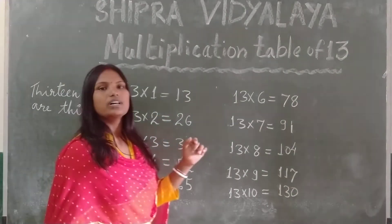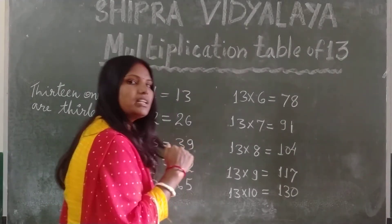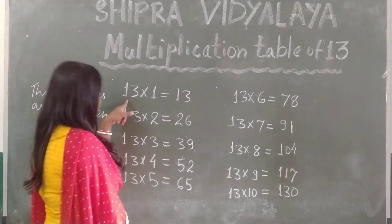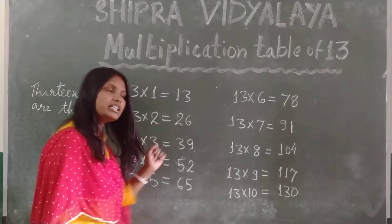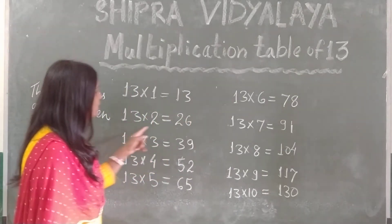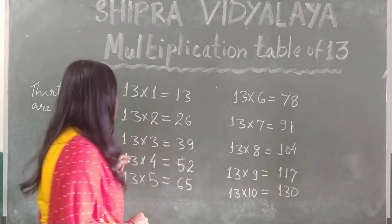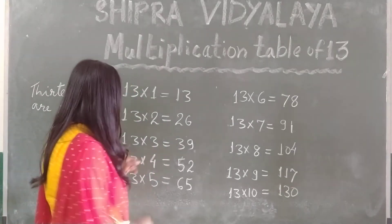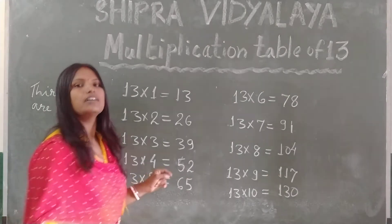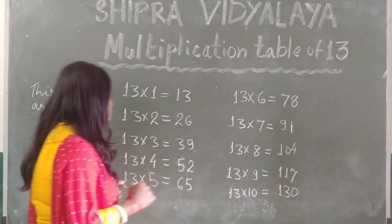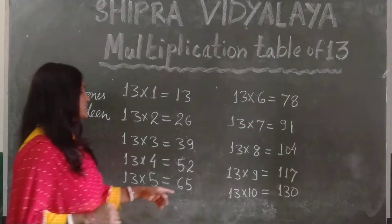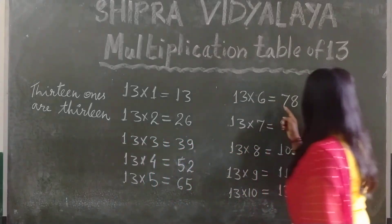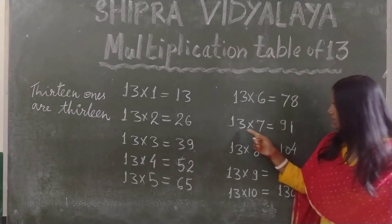So now repeat the table of 13. 13 1's are 13. 13 2's are 26. 13 3's are 39. 13 4's are 52. 13 5's are 65. 13 6's are 78.